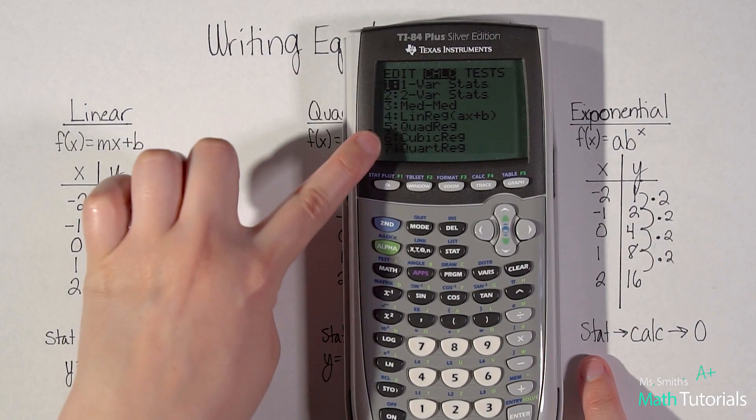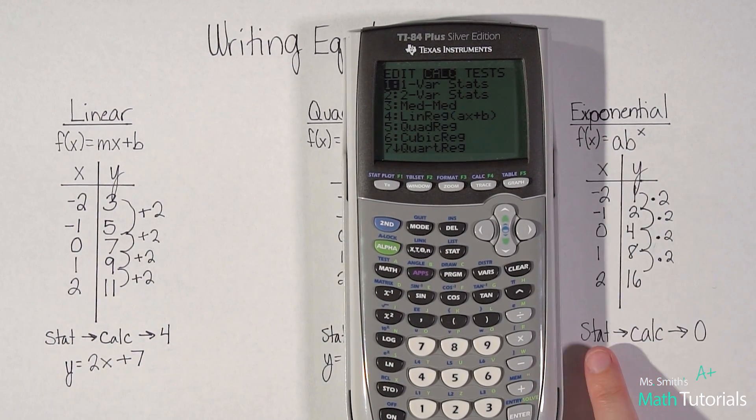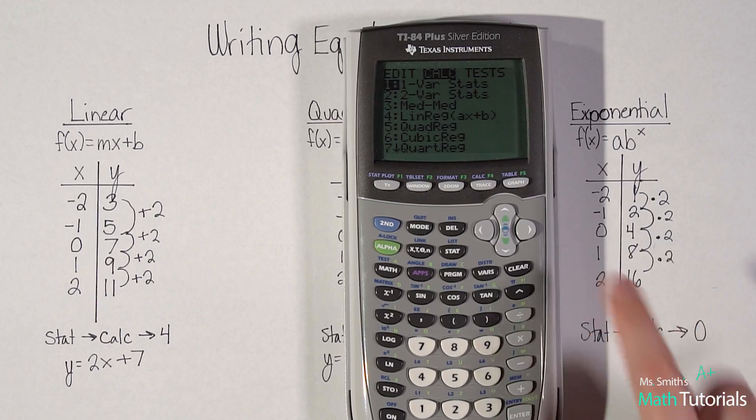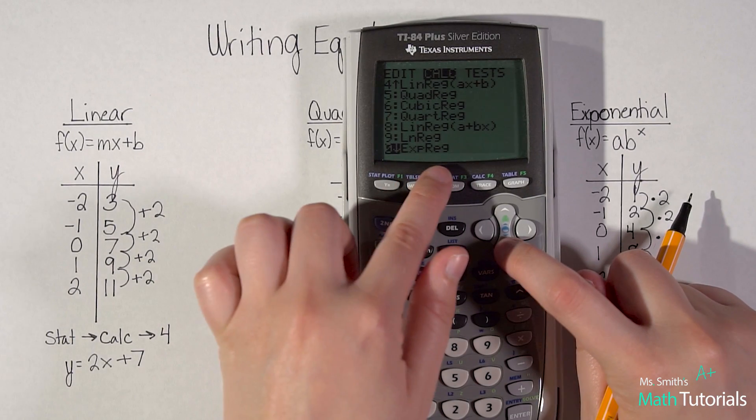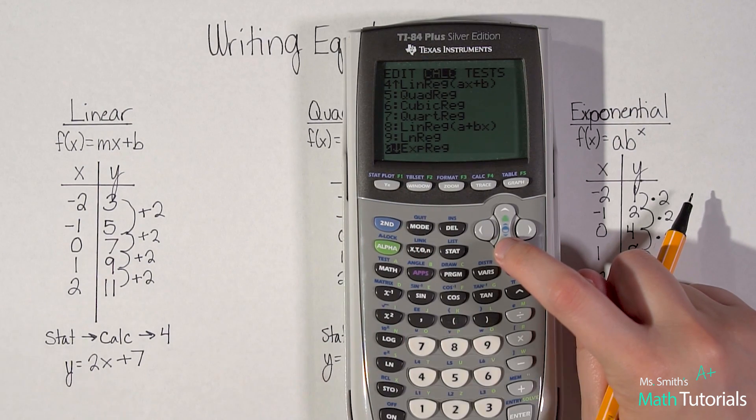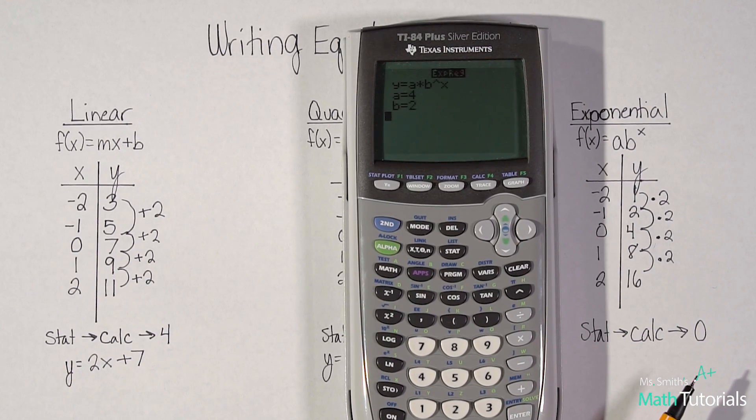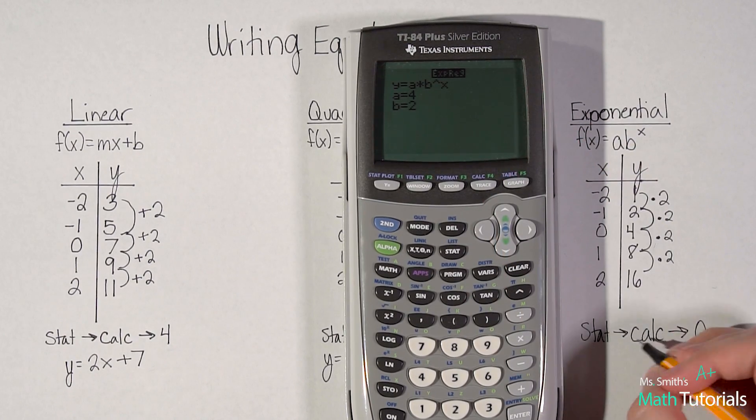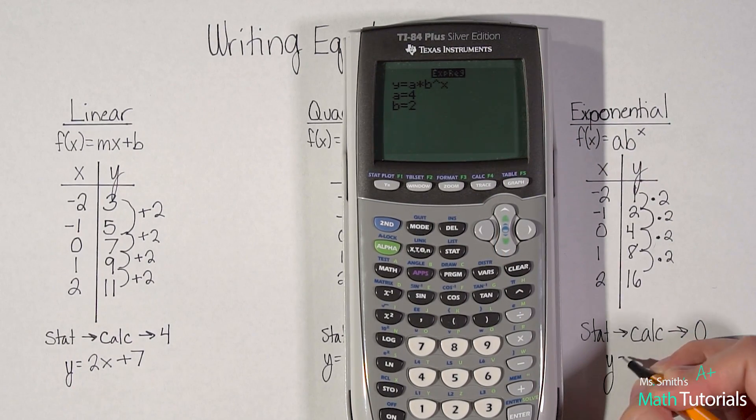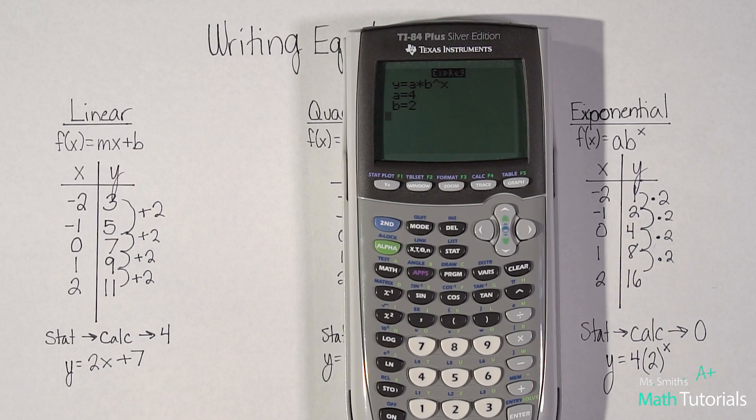We'll go to stat calc. Now we're not going to use four or five anymore. That was linear and quadratic. We're talking about exponential now. So we're going to do stat calc zero. Scroll all the way down to the zero. You'll see exponential regression. Either hit zero or scroll down to zero and hit enter. Enter through all this. And there's our equation. It says y equals a times b to the power of x. Our a value is four times our b value, which is two, to the power of x. There would be our equation.